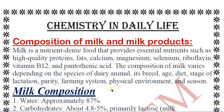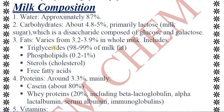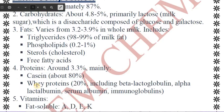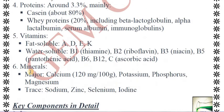Here we can see the milk composition. We have approximately water, then carbohydrates, fats, and proteins. Proteins can contain different types such as casein and whey protein. We also have fat-soluble vitamins, water-soluble vitamins, and minerals.